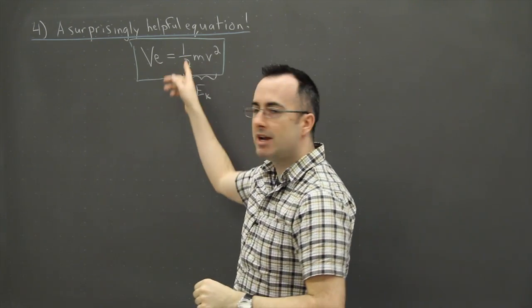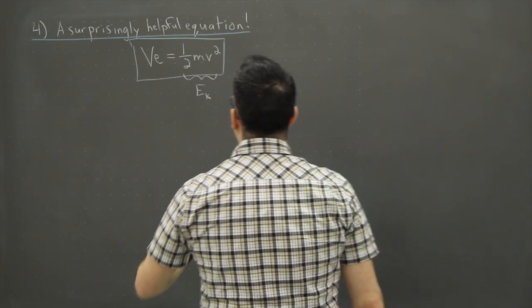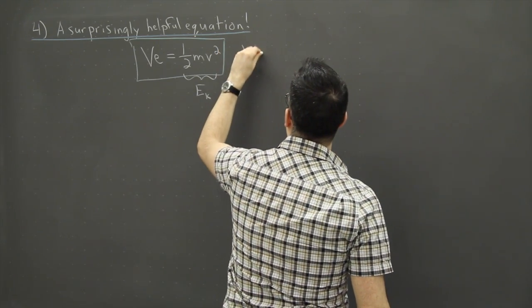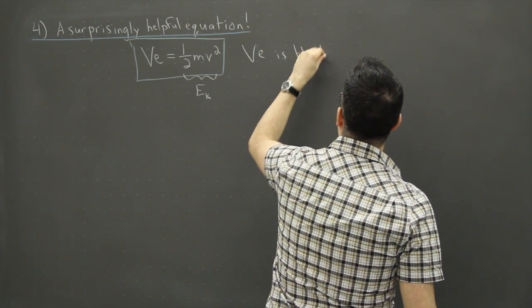So here we're like, it's like we're measuring an energy of something. And what this really represents, so this VE is the kinetic energy